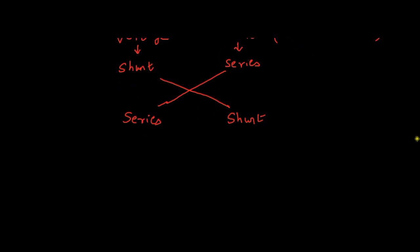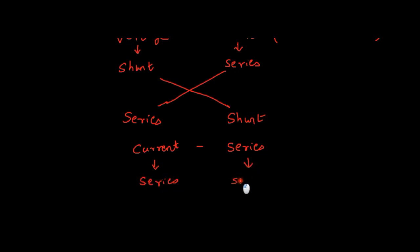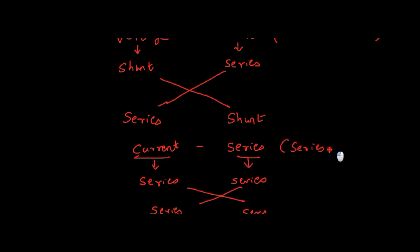Let's take another example. There is something called current series. In this case, rename current as series and let series remain series. Now you interchange them — that will become series series. So, current series topology is also called series series topology. That's how you can convert current series to another synonym called series series.